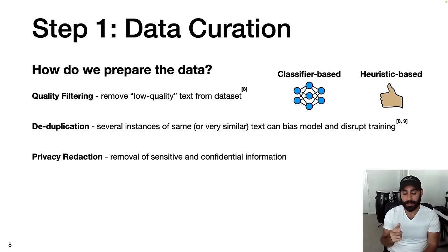Moving on to step two: model architecture. In this step, we need to define the architecture of the language model. As far as large language models go, transformers have emerged as the state-of-the-art architecture. A transformer is a neural network architecture that strictly uses attention mechanisms to map inputs to outputs. An attention mechanism learns dependencies between different elements of a sequence based on position and content — based on the intuition that in language, context matters.